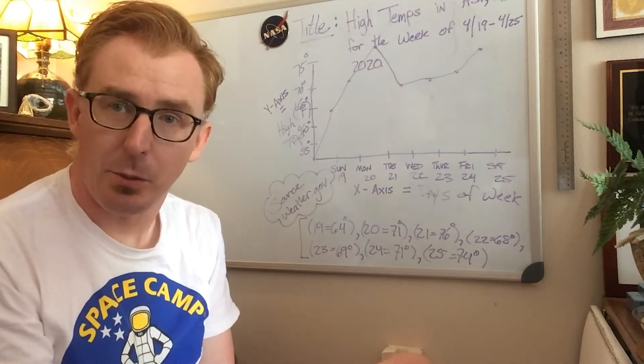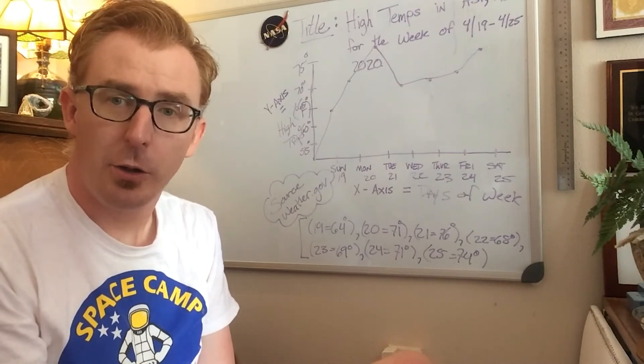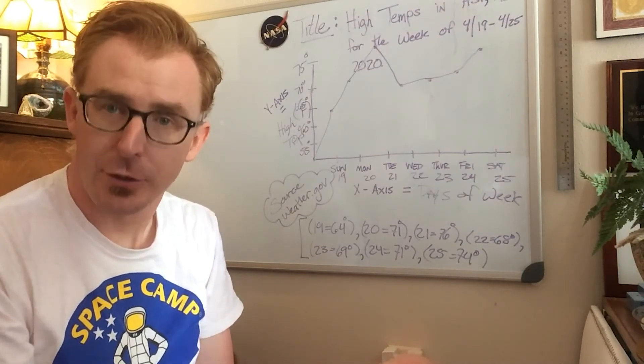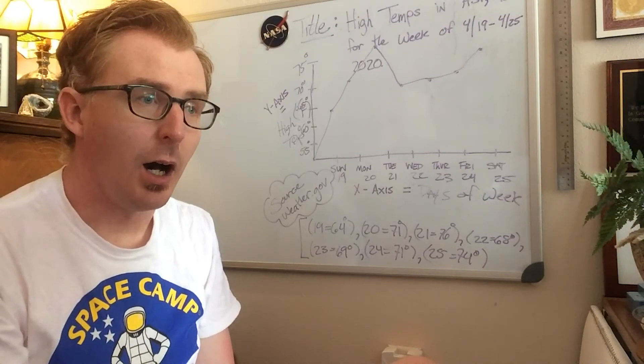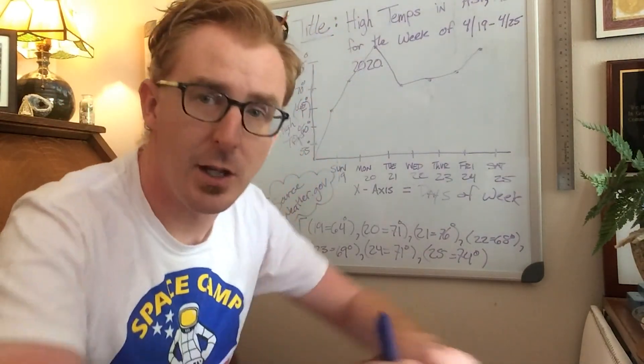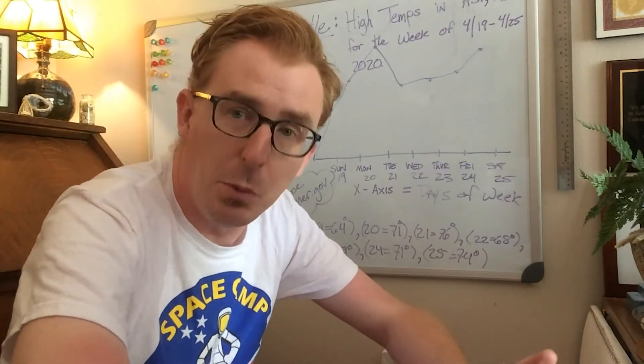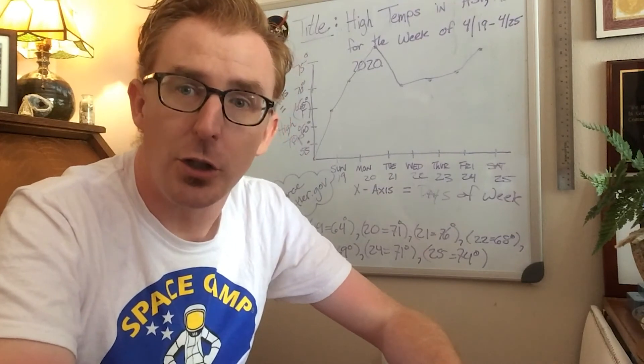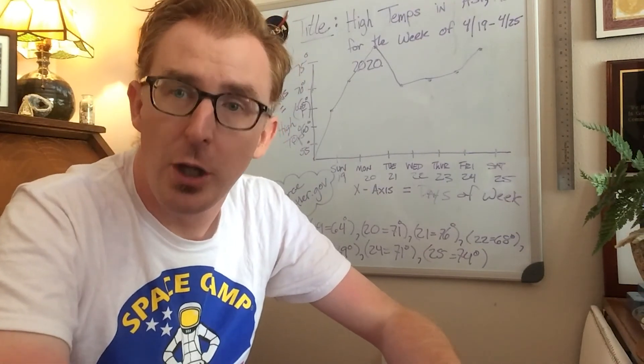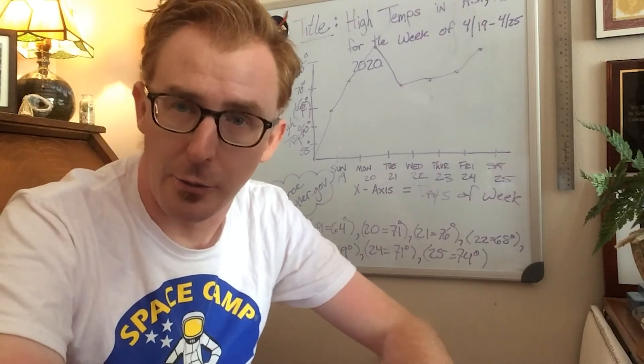So this is an example of a line graph using data weather points. So I encourage you to go and discover other type line graphs so that you can see other type data points in other type places. So go online, look in the newspapers, look in books, and see what kind of line graph examples you can do. And I encourage you to collect your own data and do your own line graphs.